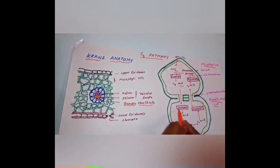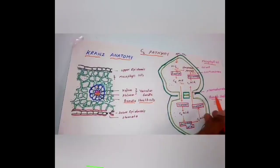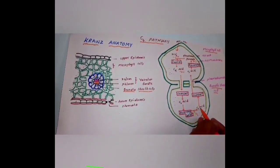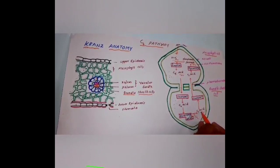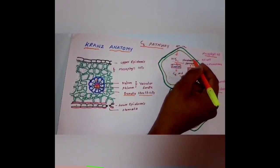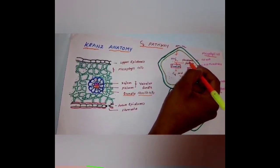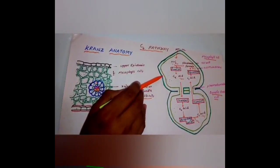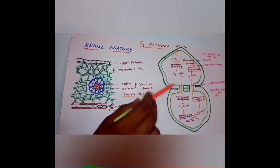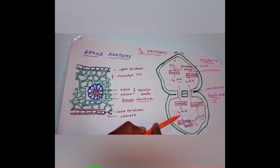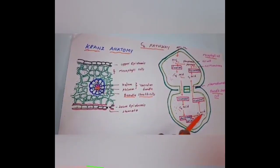The oxaloacetic acid is converted and transported into the bundle sheath cells as malic acid. The malic acid then loses one carbon dioxide. Malic acid is converted into a three-carbon compound — that is pyruvic acid. The pyruvic acid is transported back into the mesophyll cells through plasmodesmata. Then pyruvic acid is converted back into phosphoenolpyruvate, which is again ready to combine with carbon dioxide in the form of bicarbonate ions.